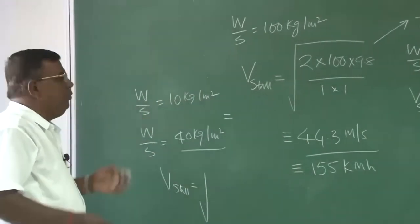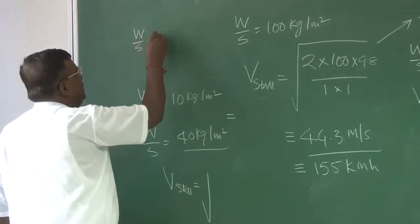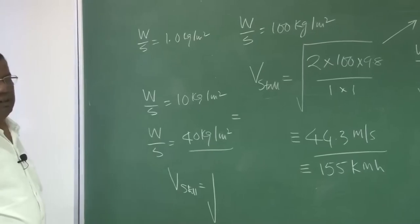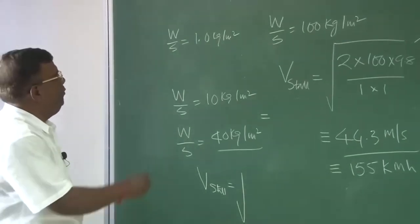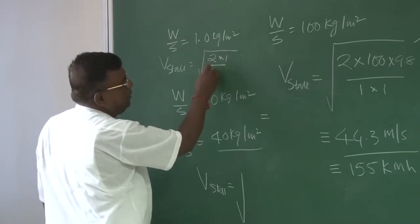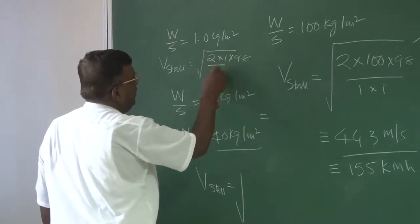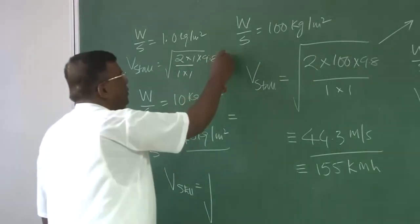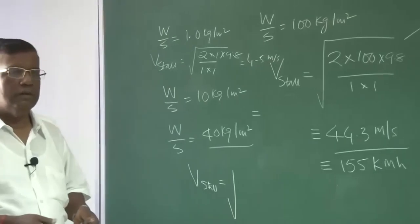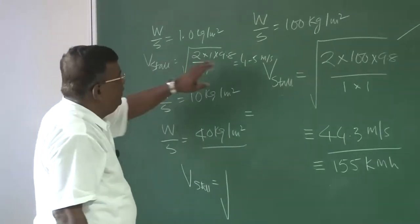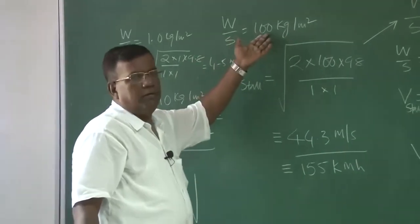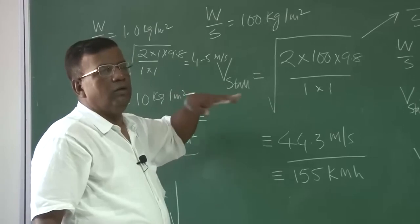For a typical aero model, W/S is of the order of 1 kg/m². If W/S is 1 kg/m², V stall equals the square root of 2 times 1 times 9.8 divided by 1 times 1, giving 4 to 5 meters per second. That is why it is so easy to fly such a machine. As W/S increases from 1 to larger values, for a bigger airplane where W/S becomes 300, 400, 500, V stall will keep increasing.